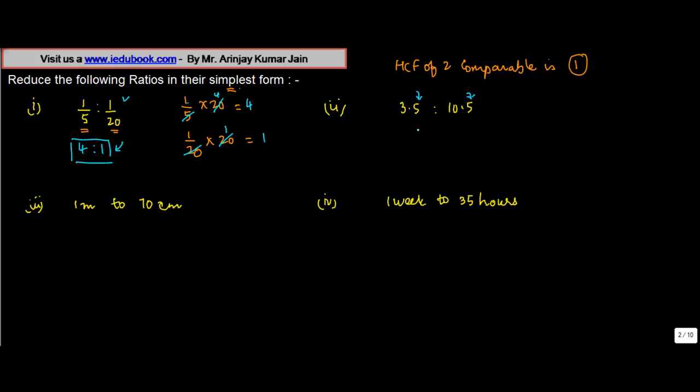So can we multiply both of them by 10? We multiply 3.5 into 10 to get 35, we multiply 10.5 by 10 to get 105. So 3.5 is to 10.5 can also be written as 35 is to 105, or you simply write this as 35 divided by 105.